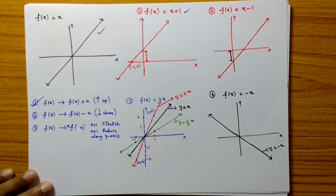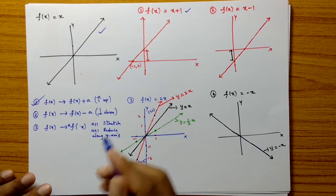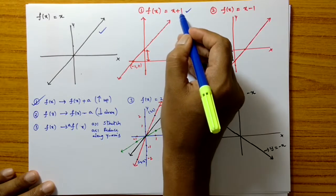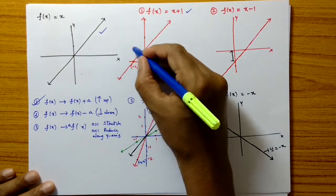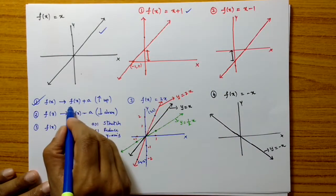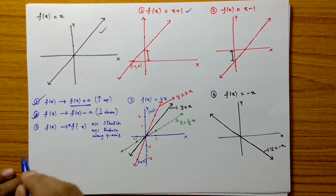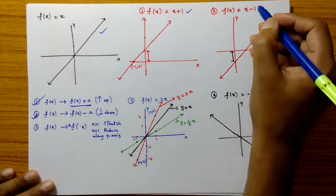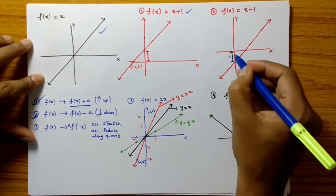When we add a constant a to the function, the graph moves a units in the upward direction. Here we added 1, so it moves 1 unit upward. Similarly, the graph of x plus 2 moves 2 units upward. Conversely, f of x minus a means the graph moves a units downward. For example, x minus 1 is the graph which moves 1 unit downward direction.